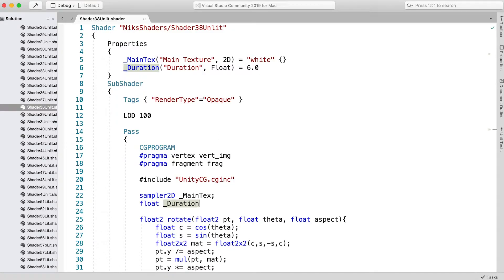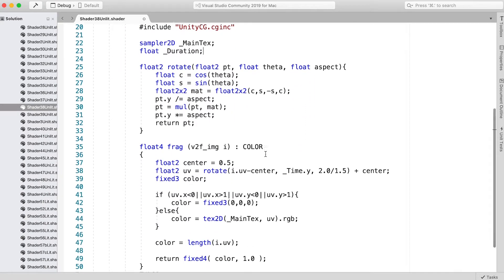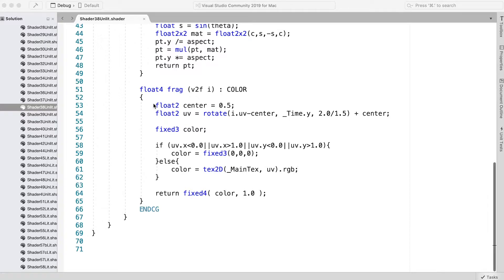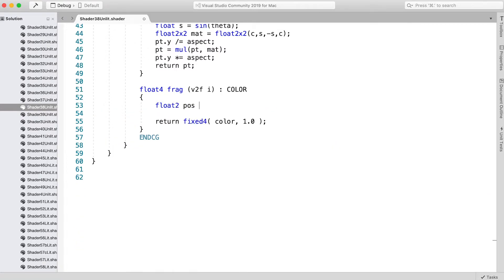We're ready to update the main function. Replace the existing code with: float2 pos = i.position.xy * 2; float len = length(pos); float2 ripple = i.uv + pos/len*0.03